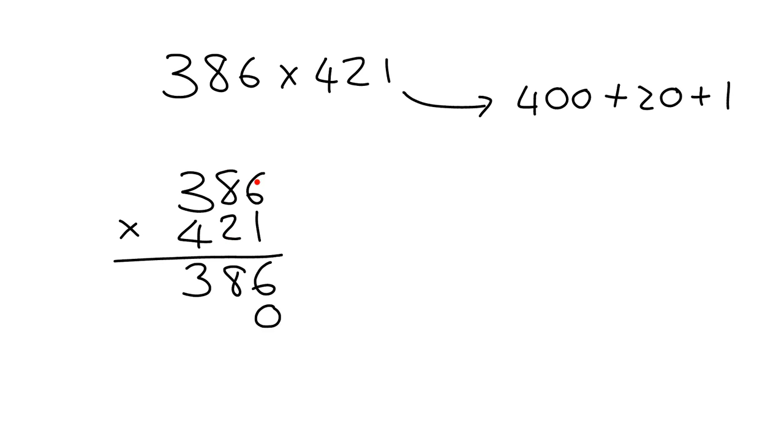So we can say 2 times 6, that gives me 12. So we put down the 2, we carry the 1. Then we say 2 times 8 is 16, plus 1, that gives me 17. Put down the 7, carry the 1. Then I say 2 times 3 is 6, plus 1, that gives me 7. So I've got that bit done. I've now multiplied through by the 20.